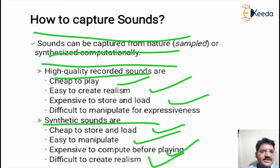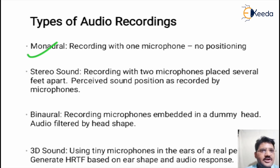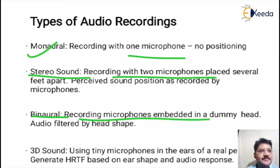There are different types for recording audio. In monaural, recording is done with only one microphone. In stereo sound, recording uses two microphones. In binaural sound, recording microphones are embedded in a dummy head. In 3D sound, tiny microphones are placed in the ears of a real person to generate HRTF format based on ear shape and audio response.